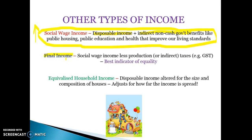Final income is the most relevant distribution of income in Australia. It is social wage income — so market income, plus government benefits, minus direct taxes, plus indirect non-cash benefits — minus any indirect taxes such as GST, excise taxes, or petrol taxes. It is the best indicator of equality but is often more inequitable than social wage income because most indirect taxes are regressive. Final income will have the second lowest Gini coefficient after social wage income.